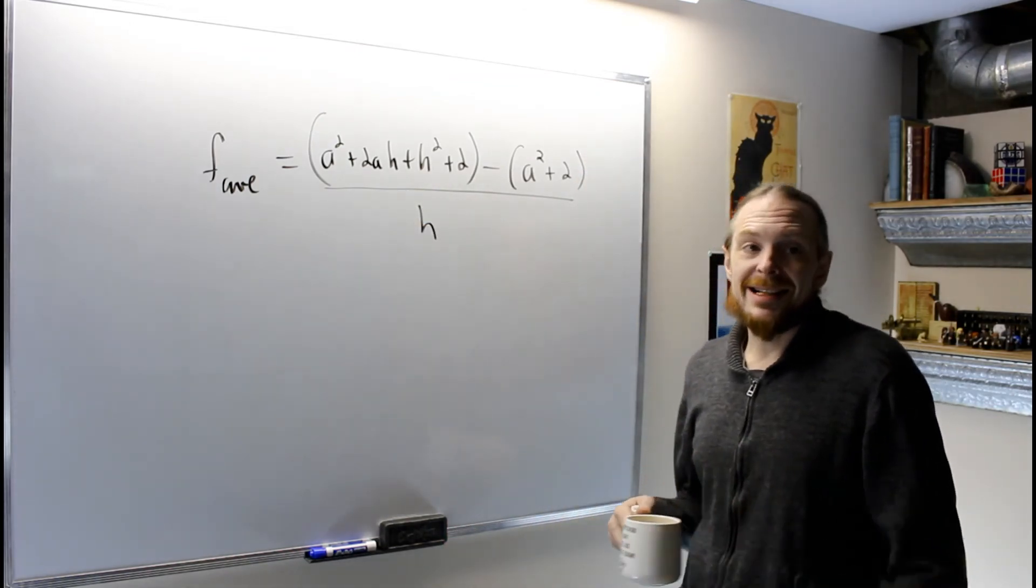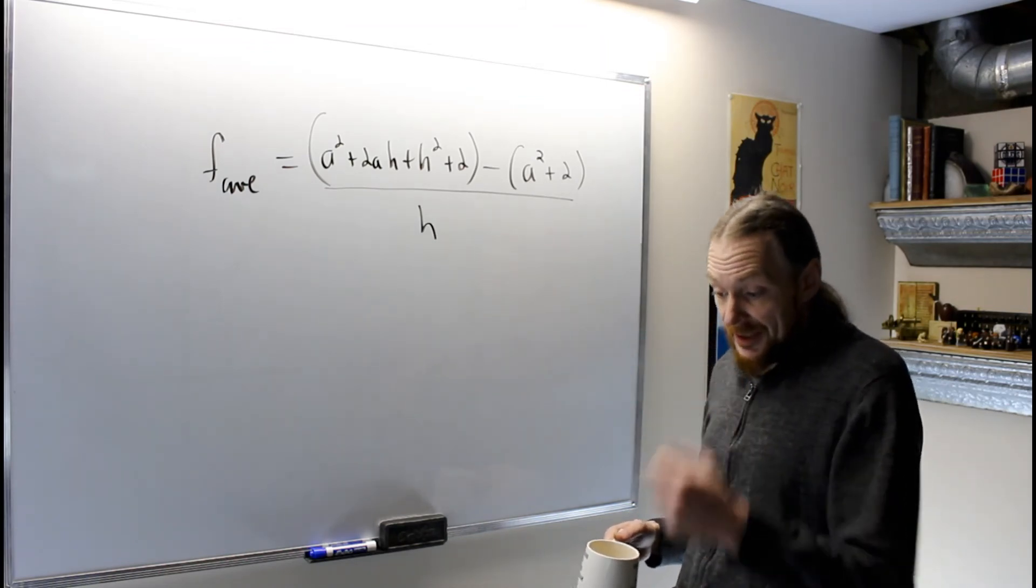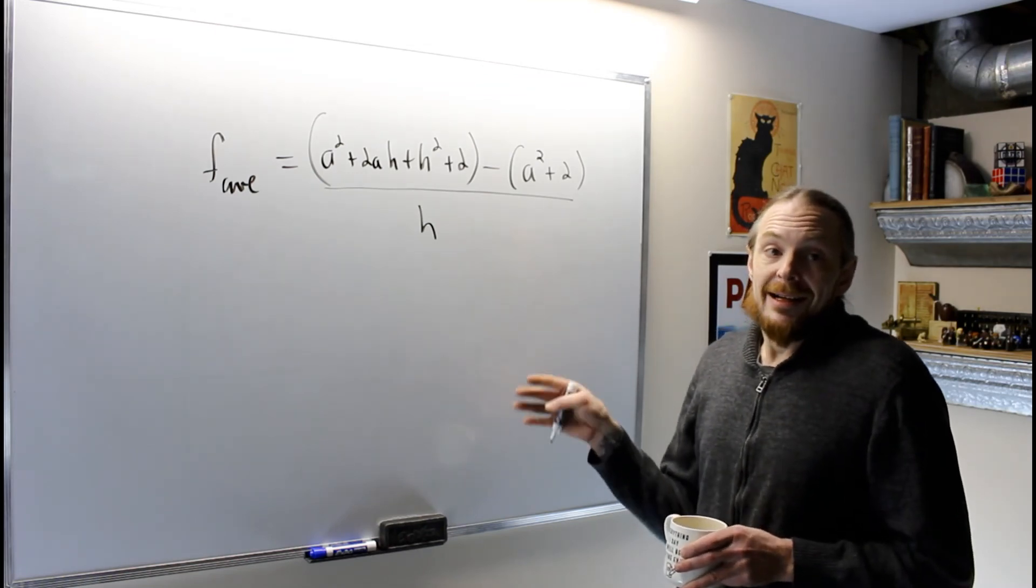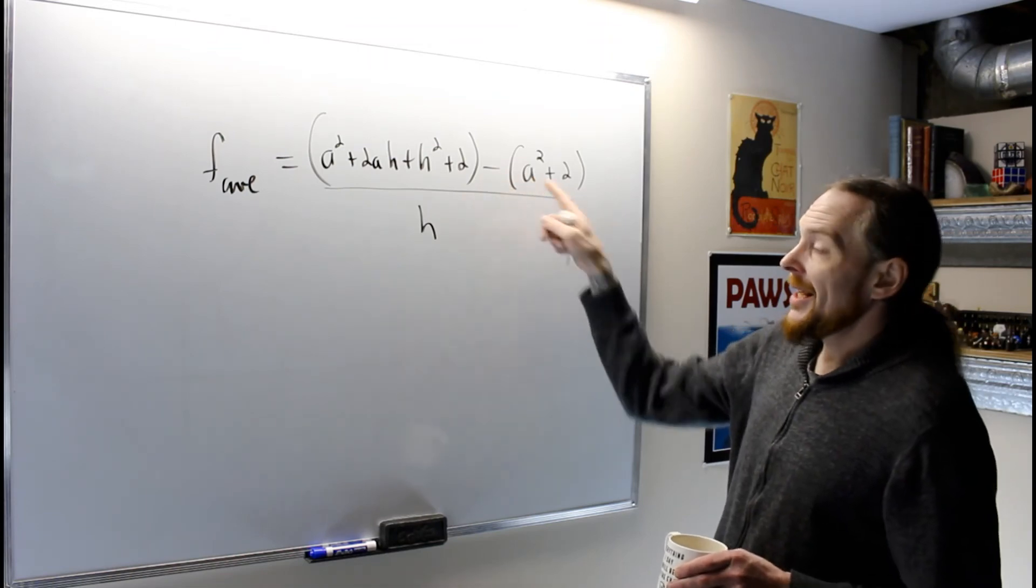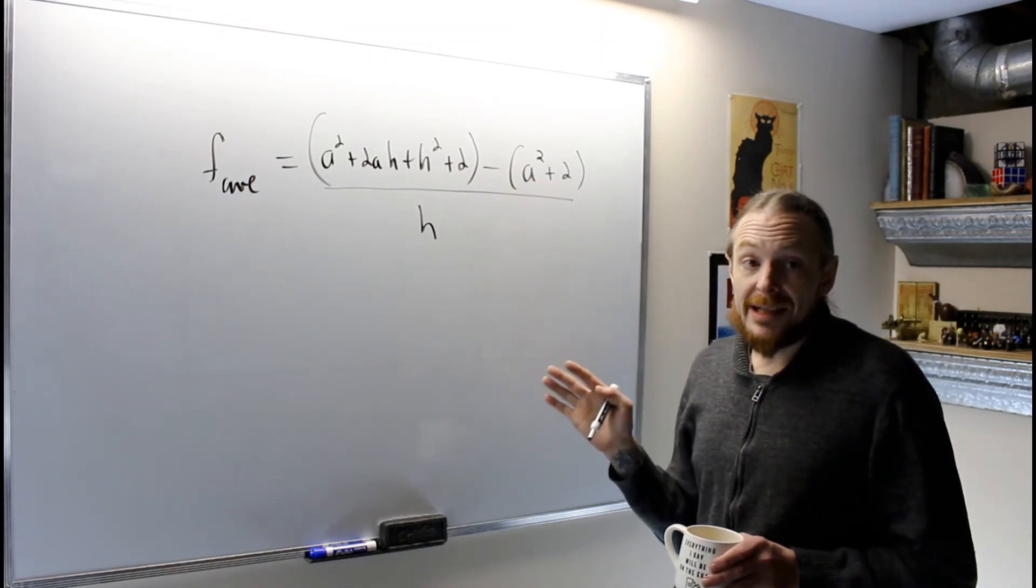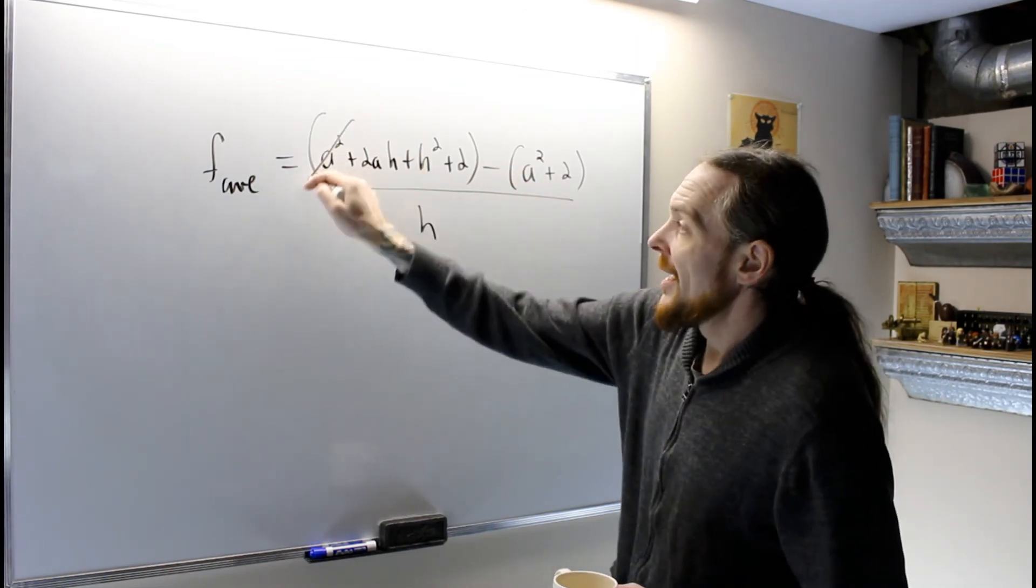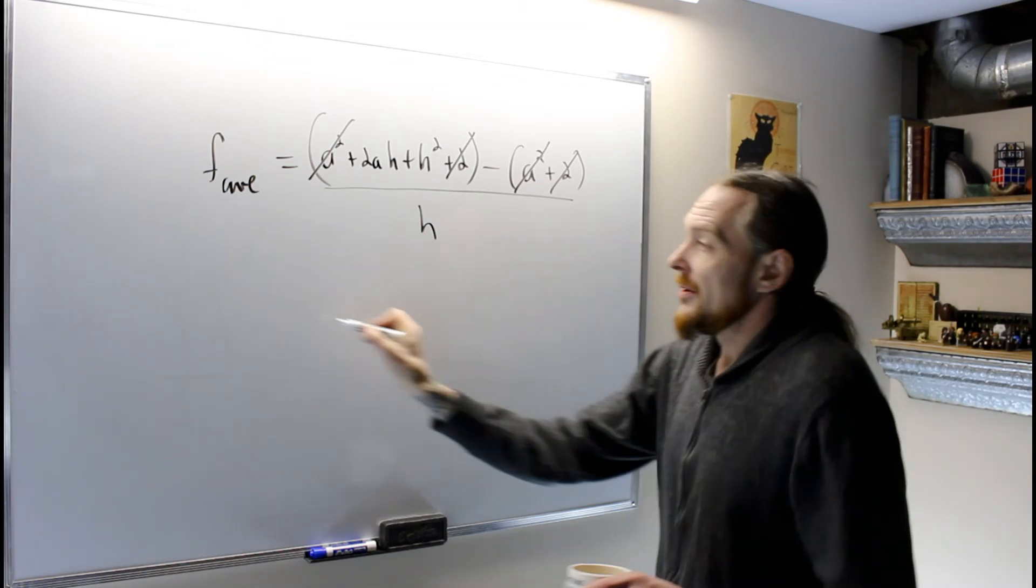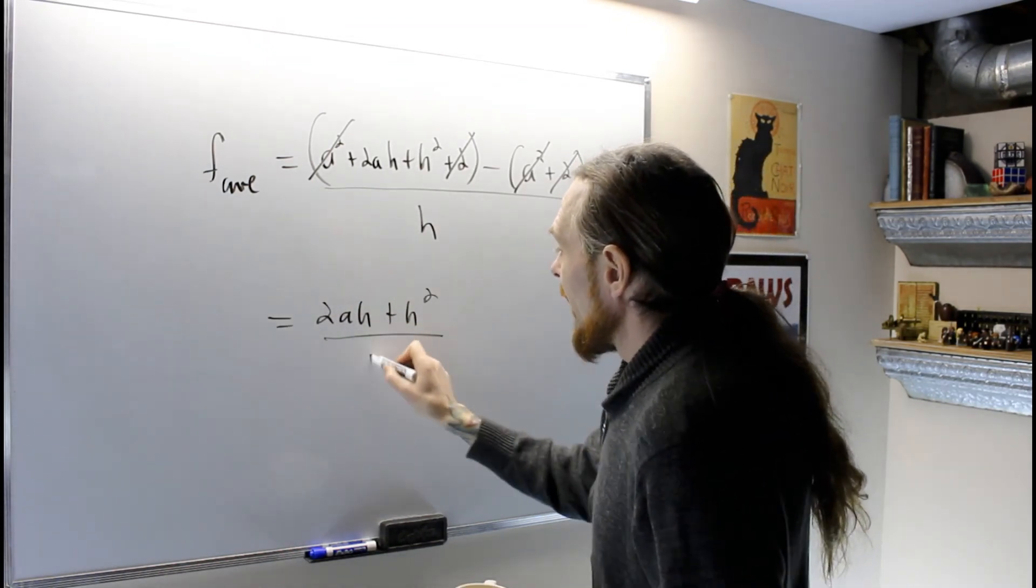Once we do this, the idea is, if you did this correctly, at this stage when we distribute the negative, anything that doesn't have h in it will cancel. The negative goes onto both terms. A² cancels with a² and 2 cancels with 2. So this becomes 2ah + h² over h.